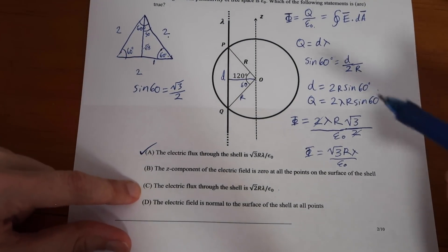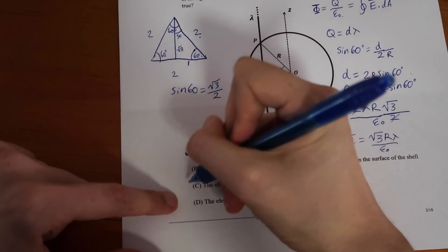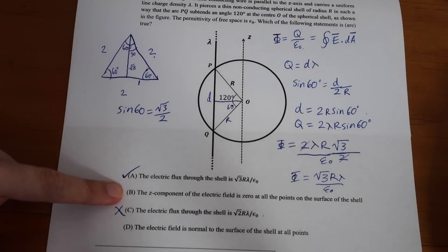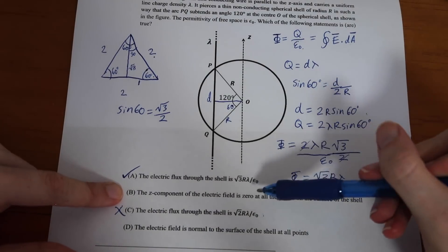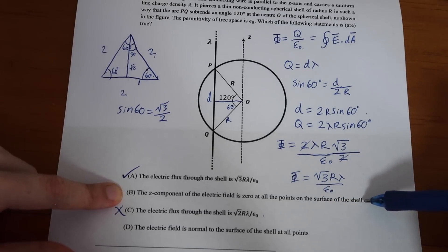By the same argument, C is not going to be correct because it can't be both A and C at the same time. All right, let's look at B.